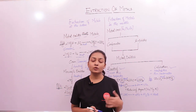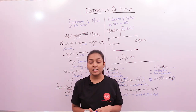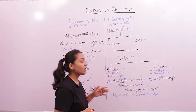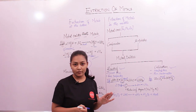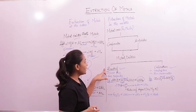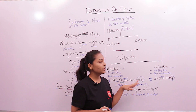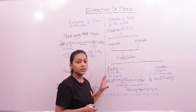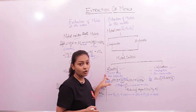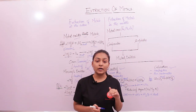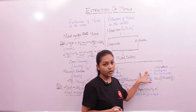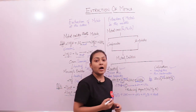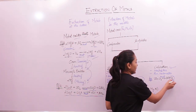Before moving on to extraction of metals at the top of the reactivity series, let's summarize roasting and calcination. Roasting is used for sulphides; calcination is used for carbonates. In roasting, the metal ores are burned in the presence of excess air; in calcination, in limited air. The by-product of roasting is sulphur dioxide gas, and the by-product of calcination is carbon dioxide gas. Thermite reactions can also be used to join cracked machine parts and railway tracks.